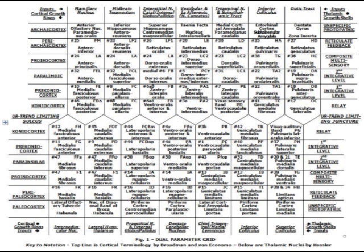Furthermore, each affiliated thalamic nucleus of specific age and input coordinates projects principally to that cortical area comprising identical pair coordinate values, implying that the evolution of both the dorsal thalamus and the cortex are similarly defined in terms of the specifics of the dual parameter grid. More details posted at fourbrain.org.